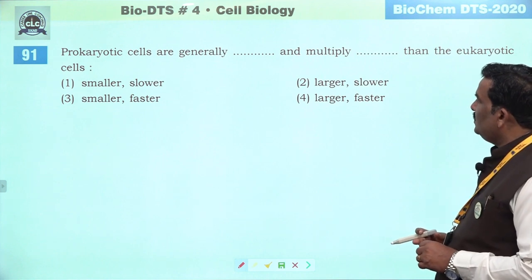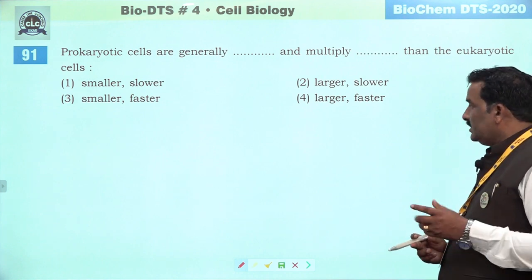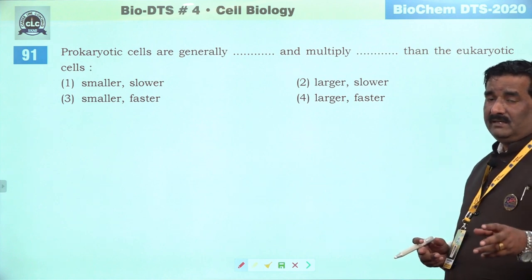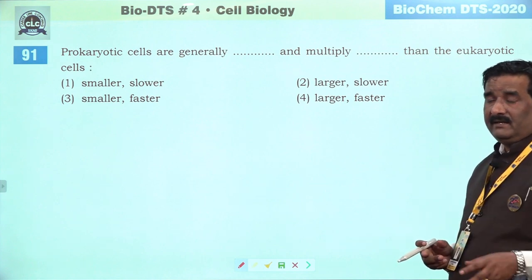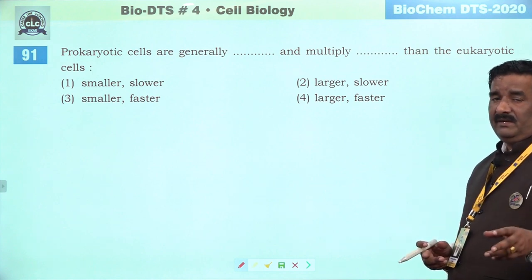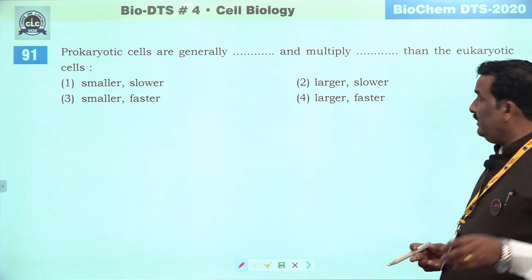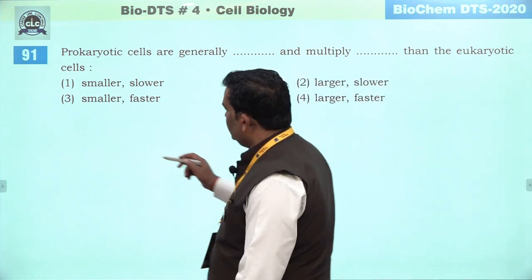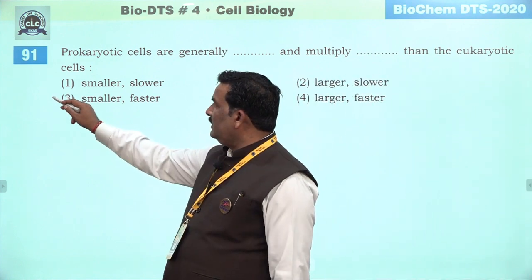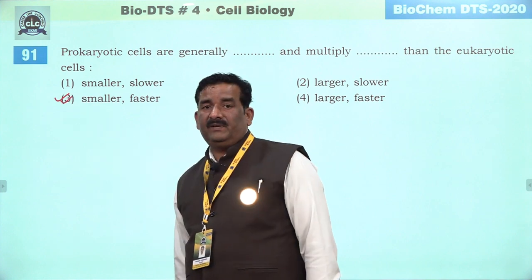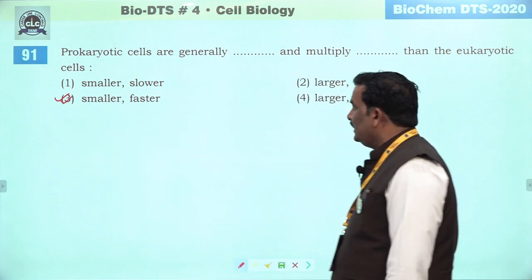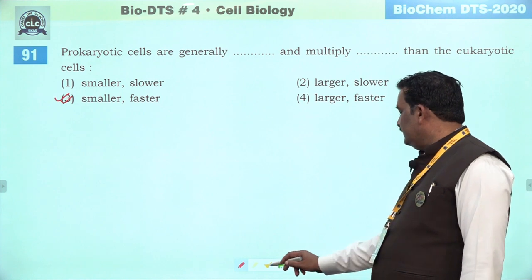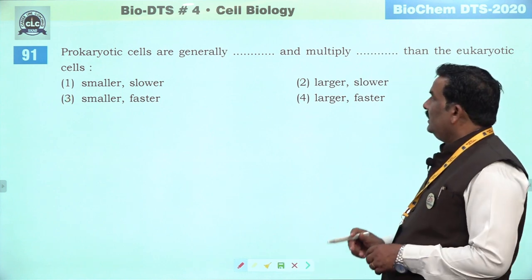Next question: prokaryotic cells are generally smaller but represent faster movement — like each bacteria may divide within 20 minutes. Third is the right answer.